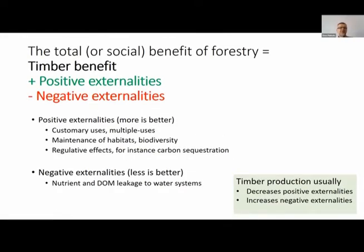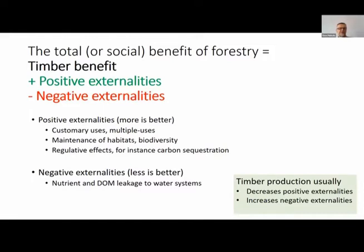The definition of the total benefit of forestry — especially in Finland and Sweden — is equal to timber benefit plus positive externalities minus negative externalities. When you are producing timber, you are causing some side effects, called externalities. Positive externalities are those for which more is better: for example, multiple uses, berry picking, wild mushrooms, maintenance of habitat, biodiversity, regulatory effects like erosion control, carbon sequestration, water management — these kinds of things.